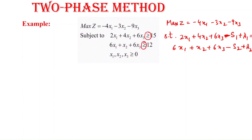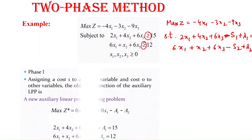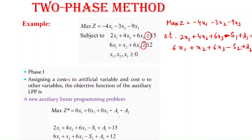In the two-phase method, as discussed in the last lecture, in Phase 1 we write the auxiliary LPP where the objective function assigns a cost of -1 to each artificial variable: -a1 - a2. Always remember: for a maximization problem, the cost of artificial variables is -1. For a minimization problem, the cost is +1, or you can convert the objective function to maximization type and solve accordingly.